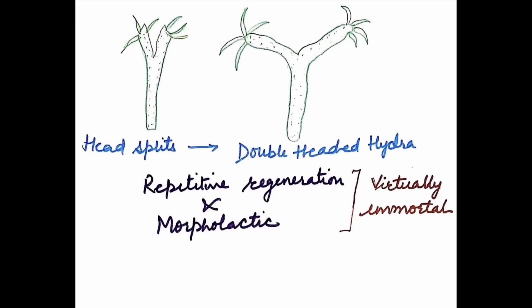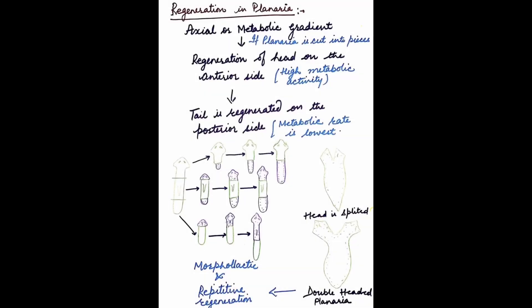It has been found that if hydra's head is split, it develops into a double-headed hydra. Hydra can also regenerate its hypostomal end a number of times, which is called repetitive regeneration. Hydra shows both repetitive regeneration and morpholytic regeneration, which is why hydra is virtually immortal.